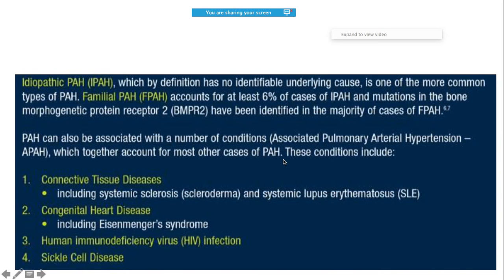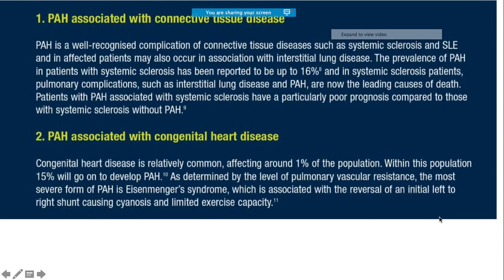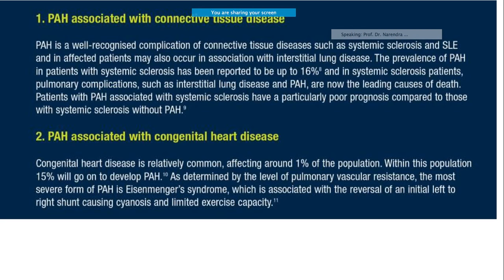Coming to the other causes - there are a lot of connective tissue disorders which we have to rule out. Patients with systemic sclerosis, if their PAH is associated with systemic sclerosis, have a particularly poor prognosis. Similarly, if someone has congenital heart disease - whenever those patients grow up, up to 15% of them will develop PAH, which is a very significant number.